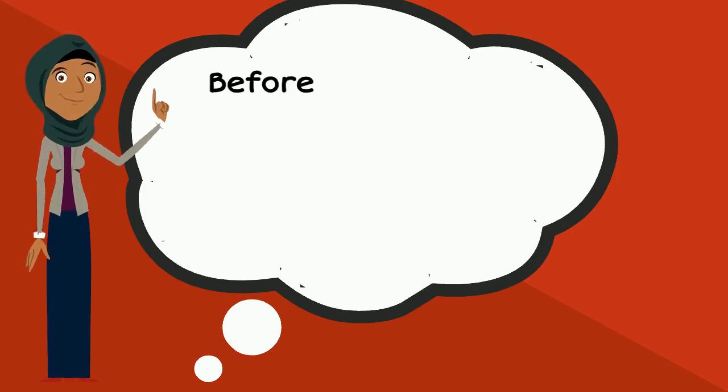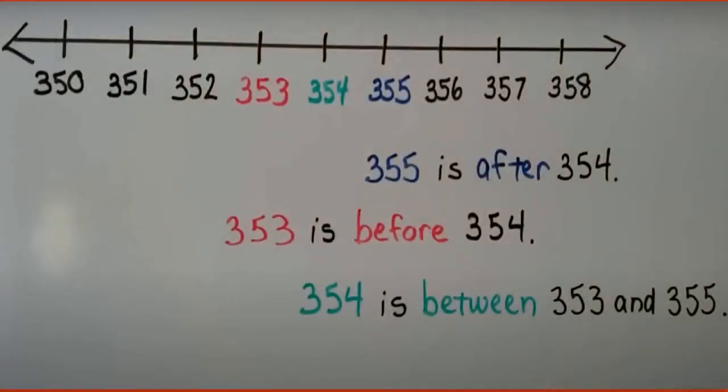Remember, when we're ordering numbers, we think of which number will come before, after, or between. I can even use a number line for that. I can say 355 is after 354, 353 is before 354, and 354 is between 353 and 355.